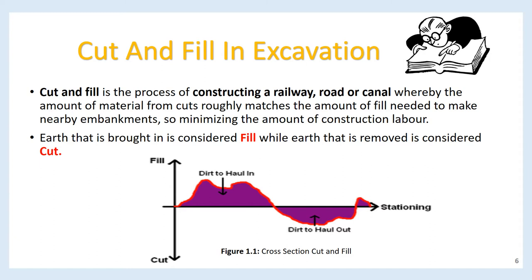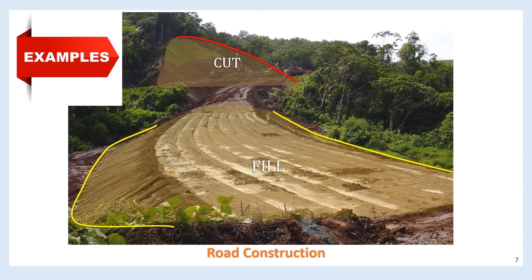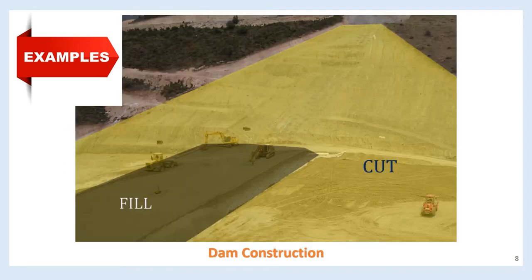As shown in figure 1.1, this particular project shows a roadway. As you can see in the background, this area used to be a hill. The original ground surface was somewhere near the red line shown. The soil beneath that has been removed or cut — therefore we call this a cut area of the roadway. In the foreground, the original ground surface was much lower than the current roadway as shown by the yellow lines, so soil has been placed in this area to raise the ground surface — we call this a fill area.